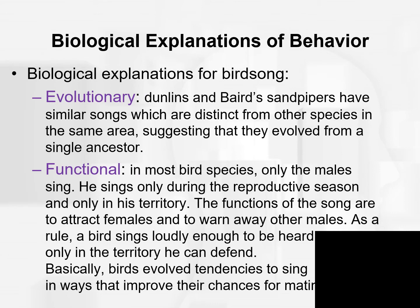Here's the distinction between the evolutionary explanation and the functional explanation. The evolutionary explanation is more historical, talking about evolutionary relationships. The functional explanation tells us what the function is — what did this give us in terms of adapting and surviving? For birdsong, looking specifically at Dunlins and Baird's Sandpipers, they have similar songs distinct from other species in the same area, suggesting they evolved from a single ancestor. The functional explanation: in most bird species, only the males sing, during the reproductive season and only in their territory, to attract females and warn away other males.